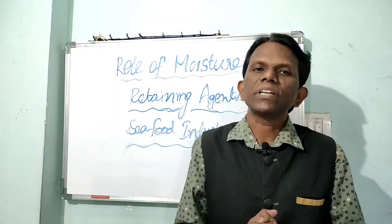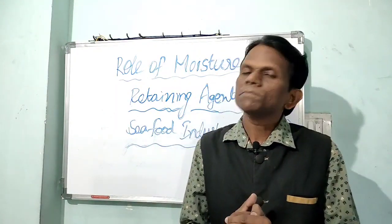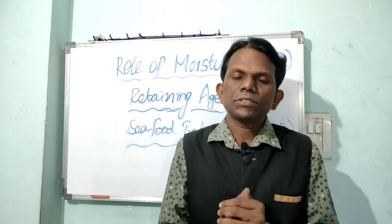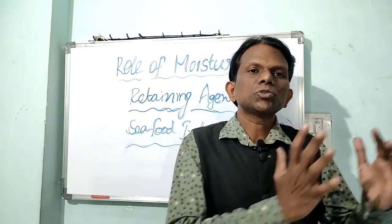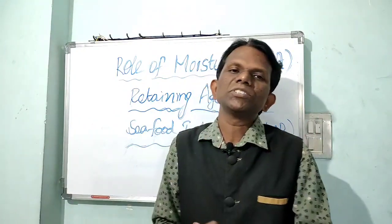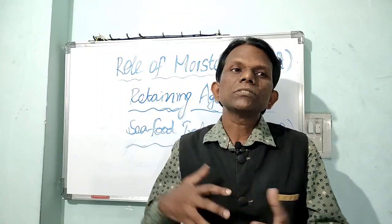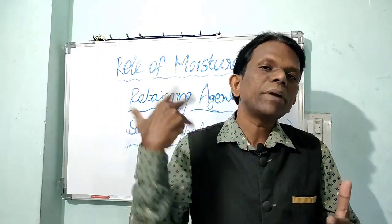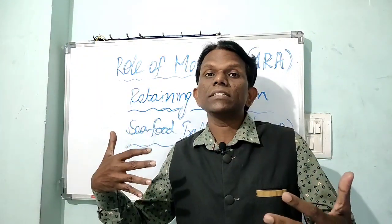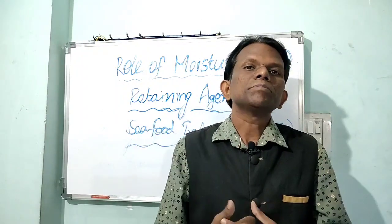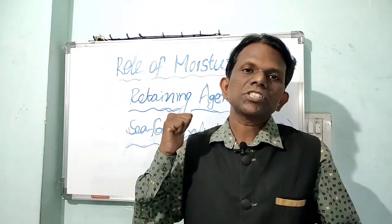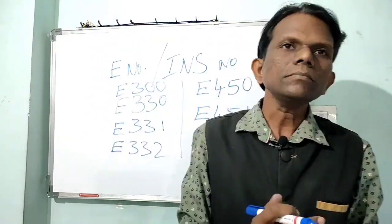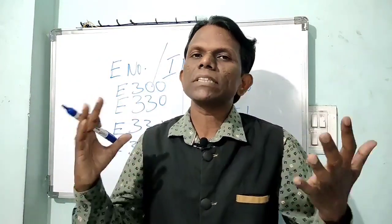The third component is what are the requirements of developed countries — what should be the sodium level, the moisture level, and the requirements for pre-dusted or breaded products, where moisture content plays a vital role in absorbing and retaining the coating. This is the Manmat Krishna FoodTech channel and today's topic is moisture retaining agents in shrimp processing industries.